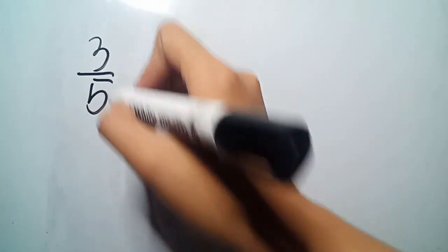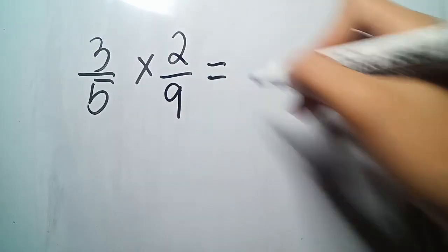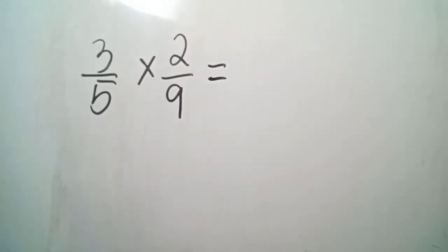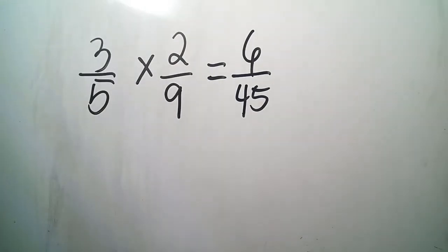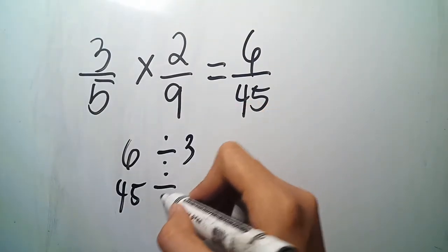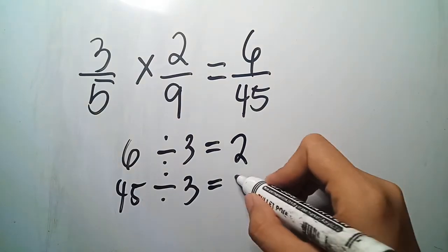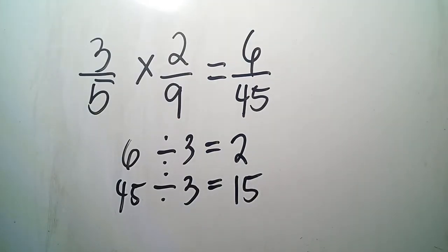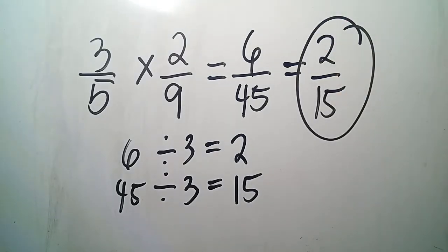Another example: 3 fifths times 2 over 9. Simply multiply the numerators: 3 times 2 is 6. 5 times 9 is 45. Now, 6 and 45 can still be simplified — they are both divisible by 3. We can divide 6 and 45 by 3. 6 divided by 3 gives us 2; 45 divided by 3 gives us 15. 2 and 15 are already simplified. Therefore, our final answer is 2 over 15.